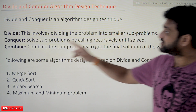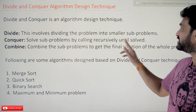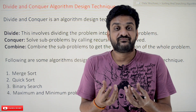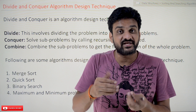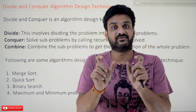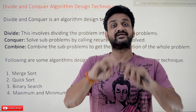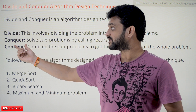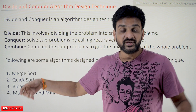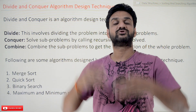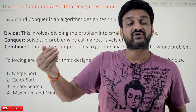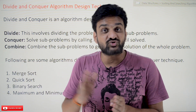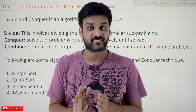The next step is conquer — solve the sub-problems by calling recursively until solved. All those small problems are solved in this step. First we divide, and then the small problems get solved — that is what we call conquer, which is why we call this technique divide and conquer. The last step is combine: after solving the problems, we combine all those small pieces, and in that final combining step we get the solution to the original problem.